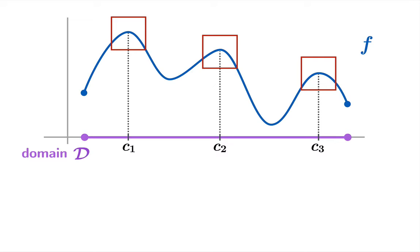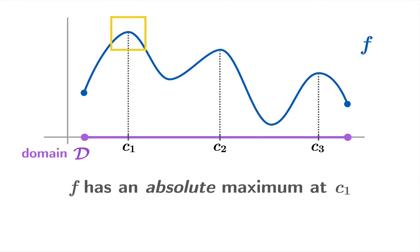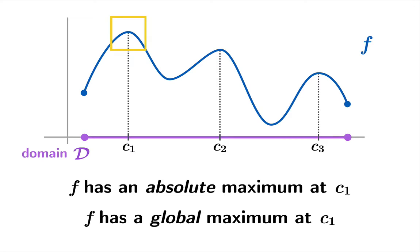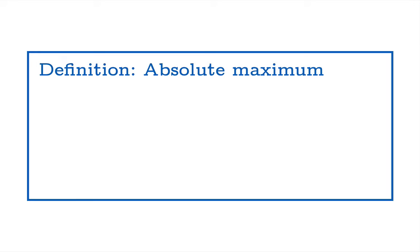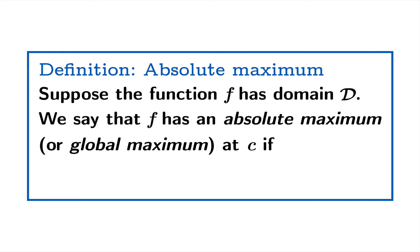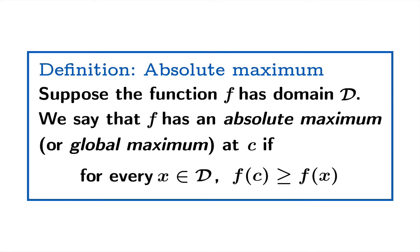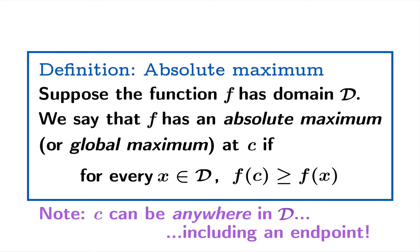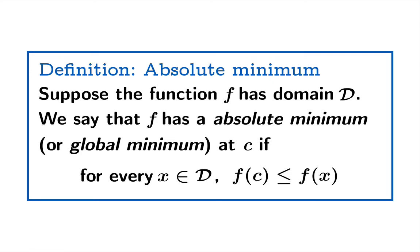Returning to our example, the function has three relative maxima, and of these there is an actual largest value throughout the domain. We say f has an absolute maximum — or global maximum — at c1: no matter where you look in the domain, c1 gives the maximum value. Formally, f has an absolute maximum at c if for every x in the domain, f(c) ≥ f(x). Note that c can be anywhere in D, including an endpoint — so endpoints definitely count for absolute or global maxima and minima. The absolute minimum definition swaps in f(c) ≤ f(x).